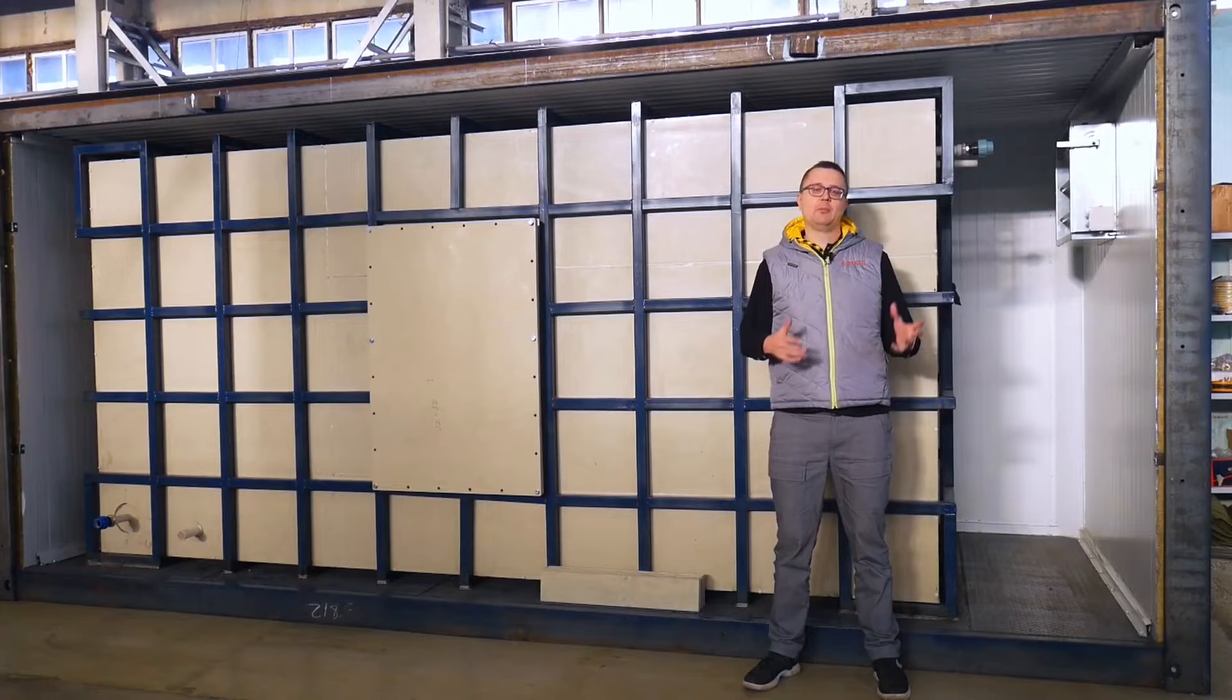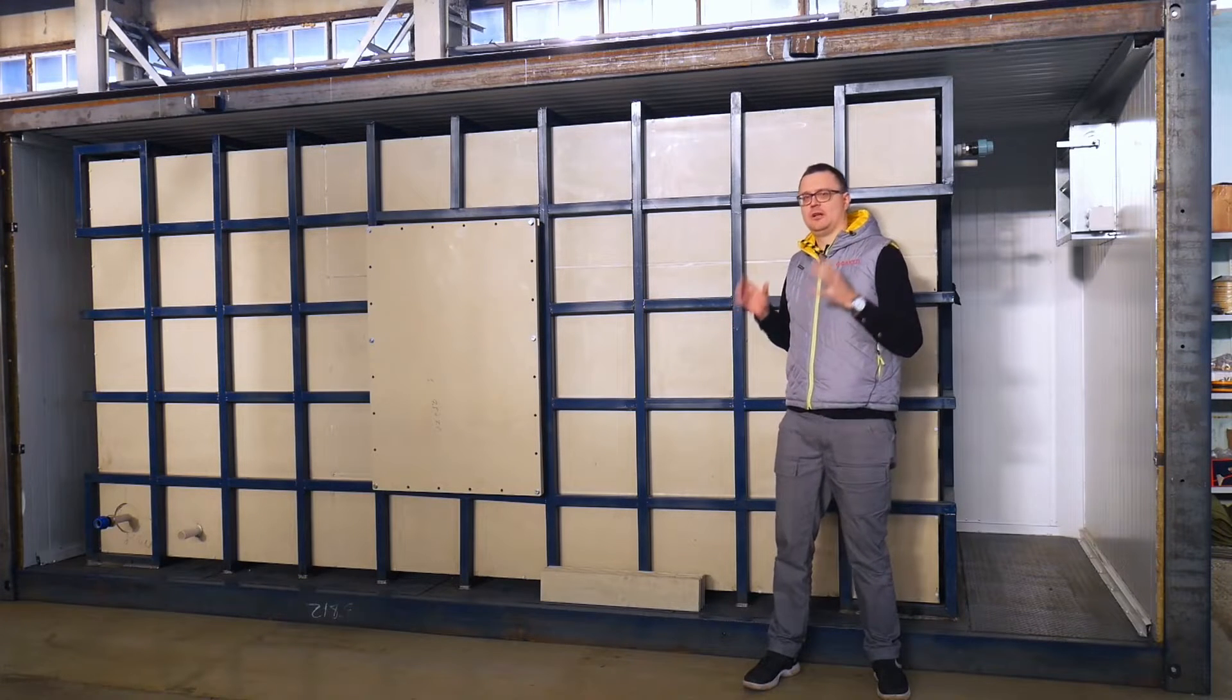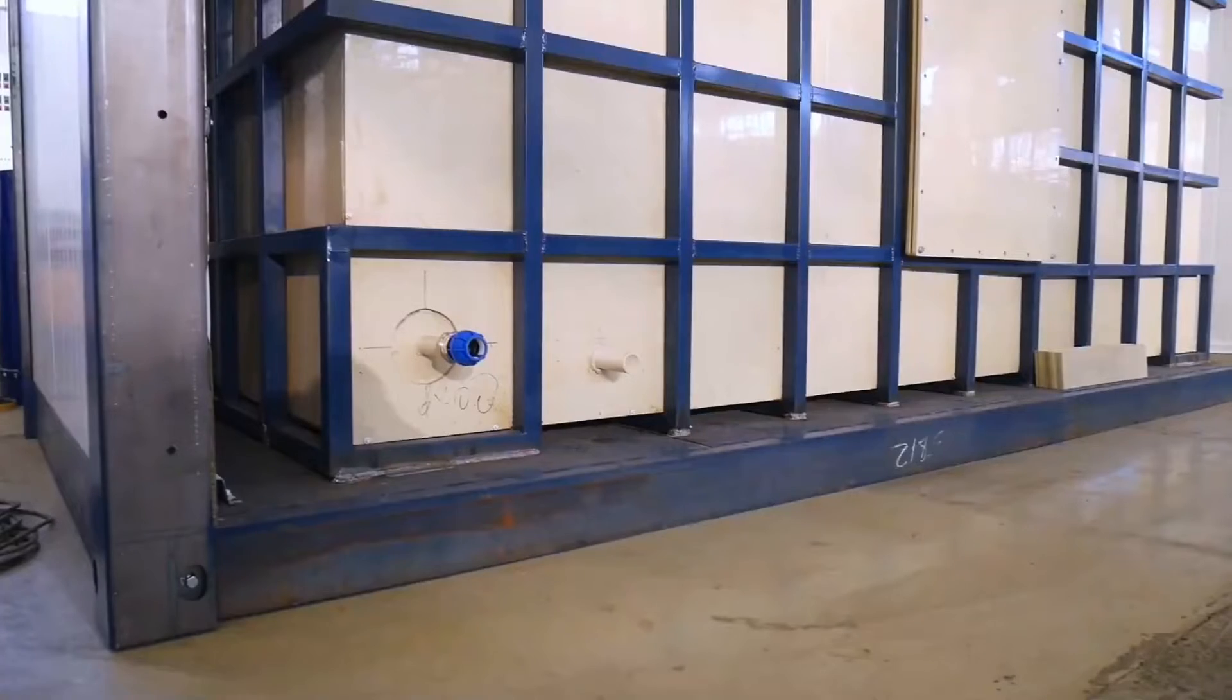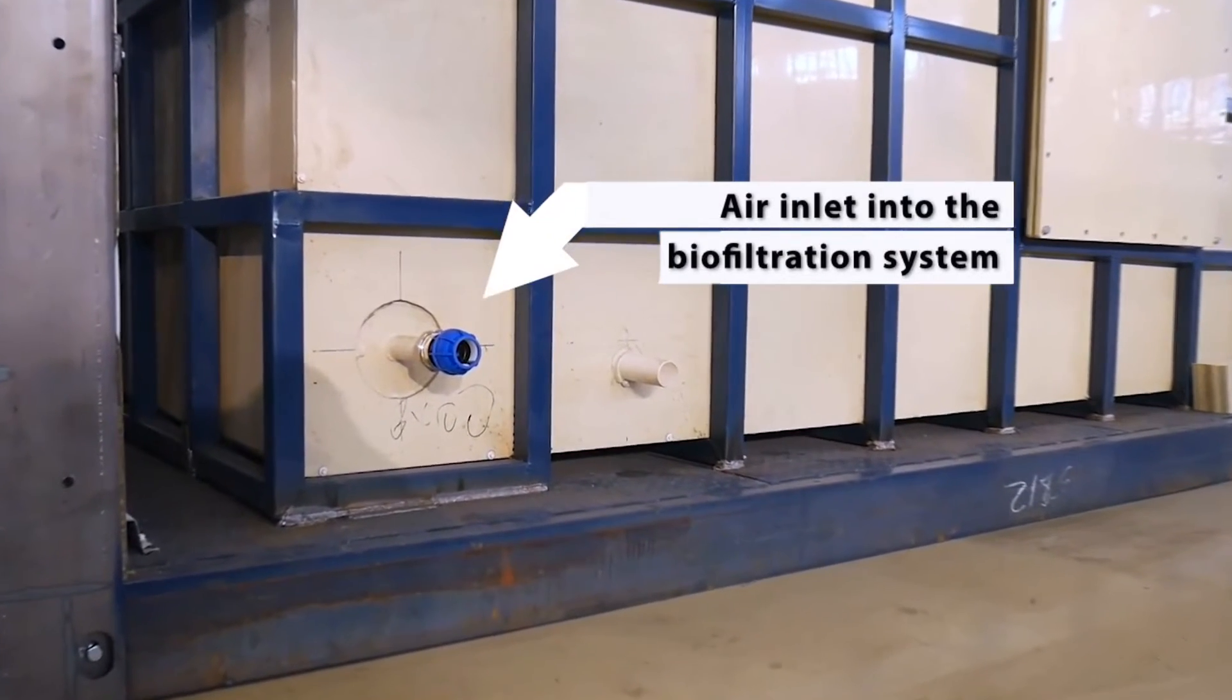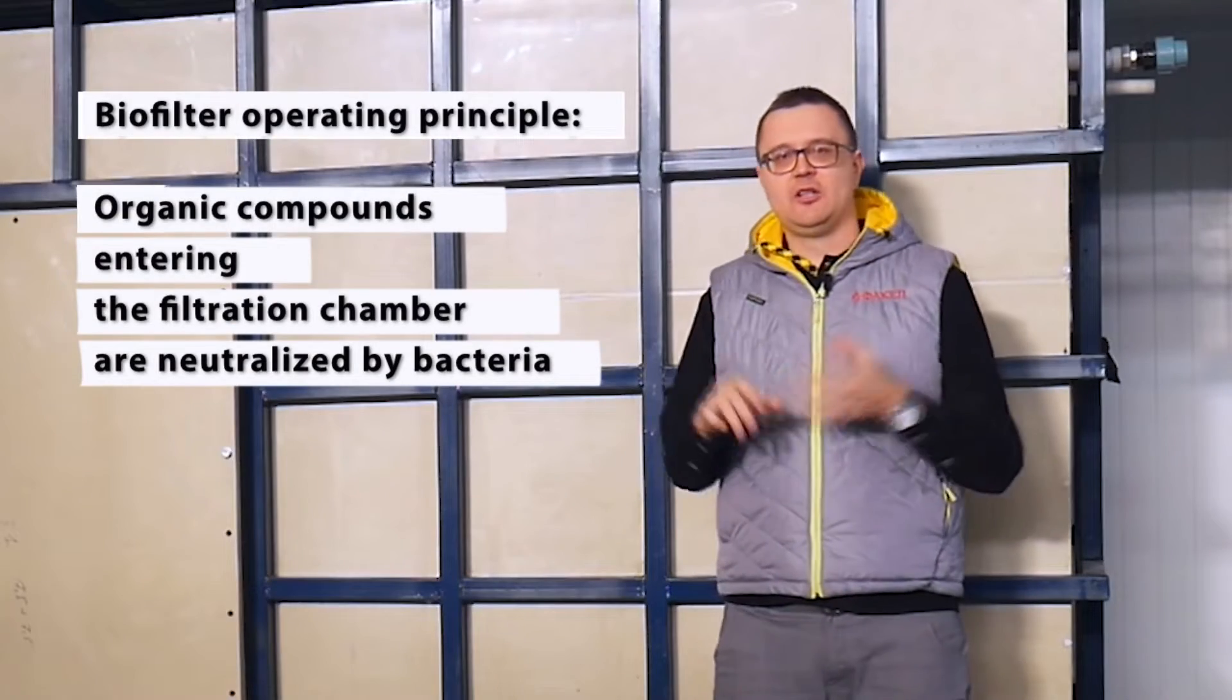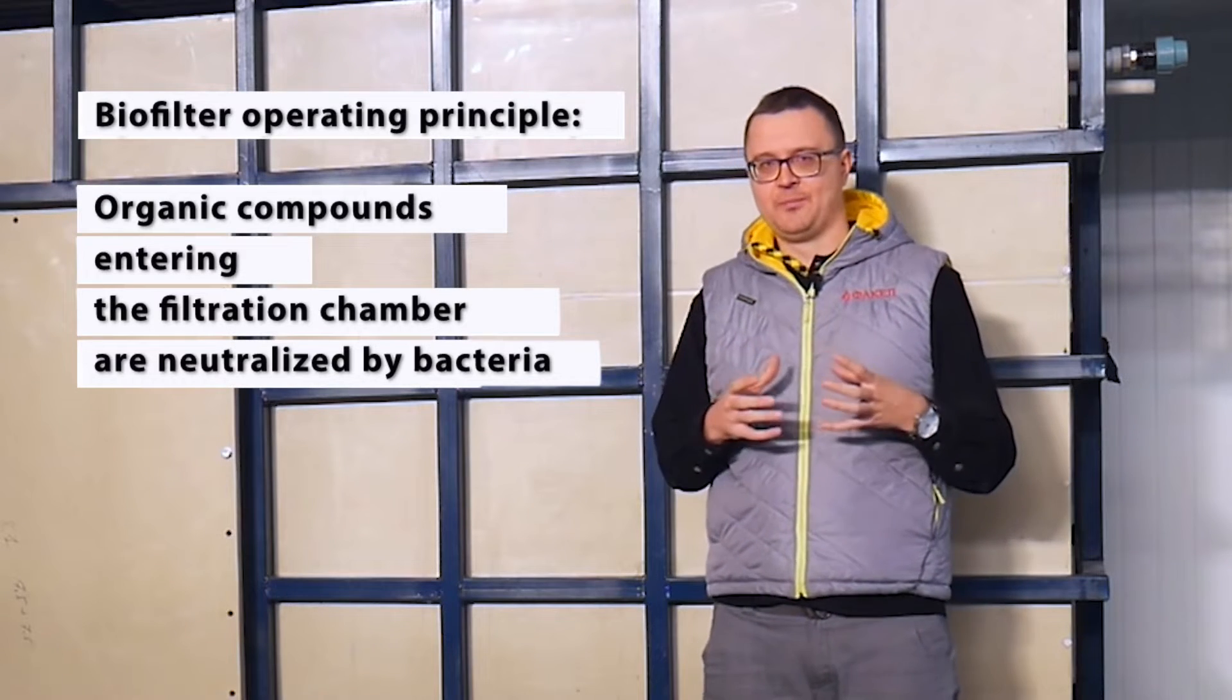The main principle of operating biofilters is that the pollutant, which is air in this case, or it may be water, passes into the biofiltration system. The biofiltration system operation is based on eating organic compounds, basically being eaten by the bacteria inside the biofilter.